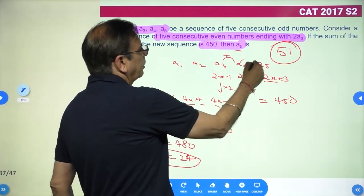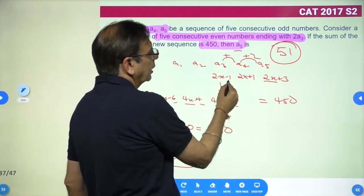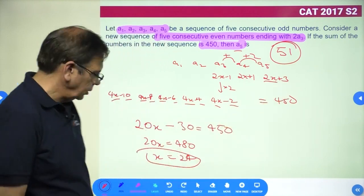For those of you wondering, obviously it will be plus 2 every time. So 2x minus 1 plus 2 becomes 2x plus 1, and then 2x plus 3.